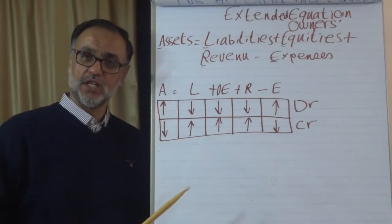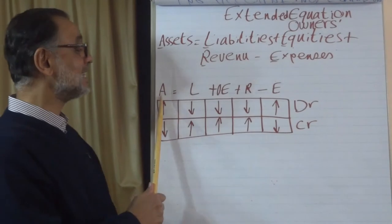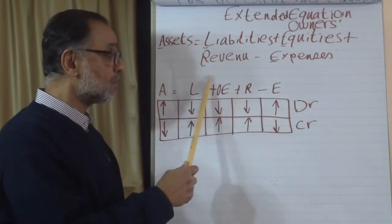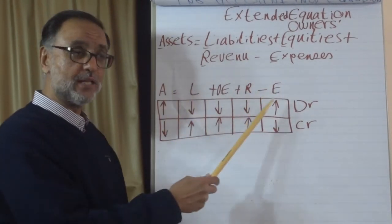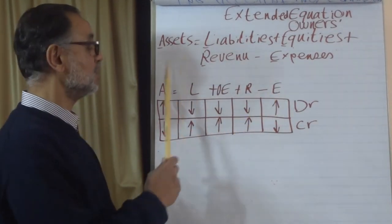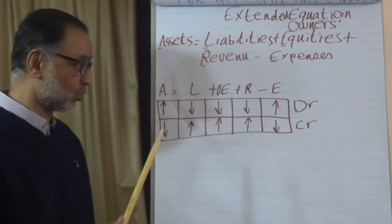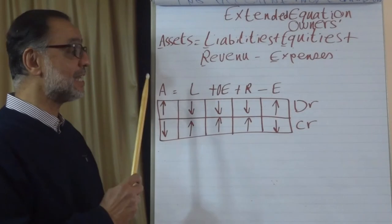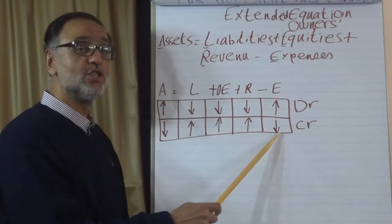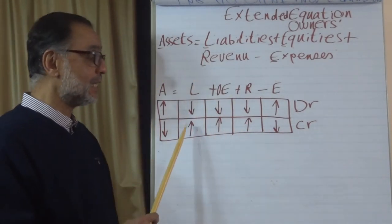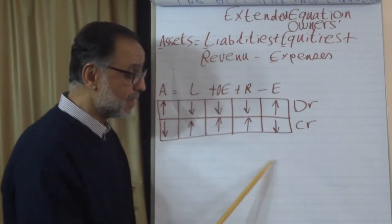Anyone who has heard about accounting has heard about the rules of debit and credit. It's very simple and easy — some people think it's hard, but it's easy once you understand it. Assets and expenses are debit by nature; all others — liabilities, owner's equity, and revenues — are credit. Any increase in assets is a debit, and any decrease is a credit. The same applies to expenses: increase is debit, decrease is credit. For the credit-natured accounts, increase is credit and decrease is debit.